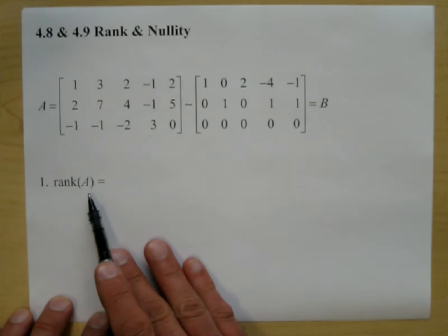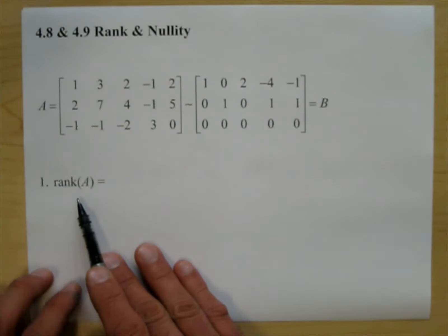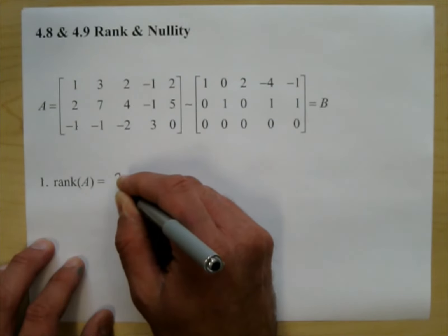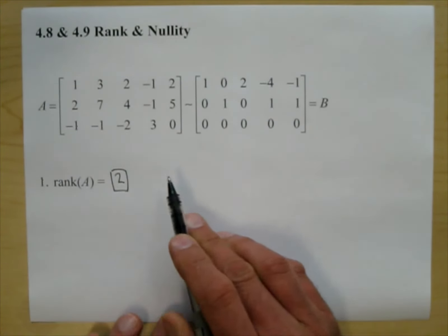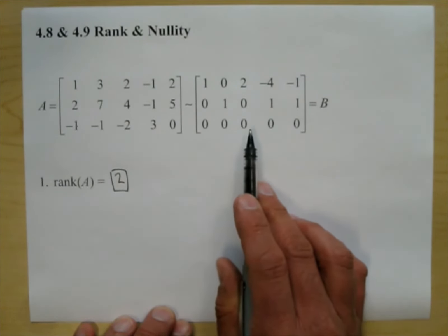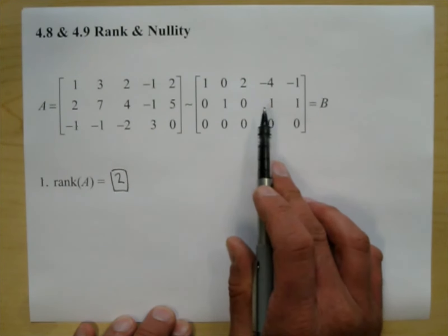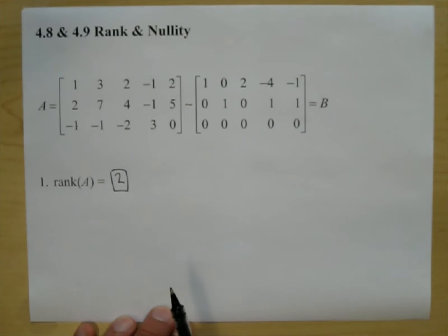The first question is: what is the rank of A? The rank of A is 2. To find the rank of any matrix, you reduce it to row echelon form or reduced row echelon form and count the number of non-zero rows, and there are two of them.